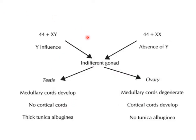In a genetically male embryo (44 + XY), the Y chromosome influences the indifferent gonads to form testes, developing the medullary cords. In the female embryo, in the absence of Y, the ovary develops: medullary cords degenerate and the cortical cords develop instead, with no tunica albuginea formation.